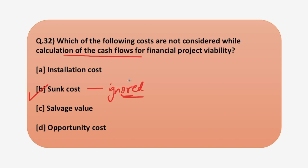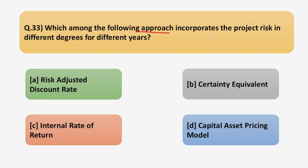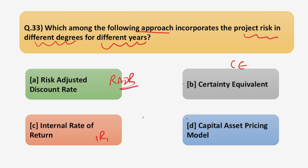The next question asks: which among the following approaches incorporates the project risk in different degrees for different years? Out of the four options — Risk Adjusted Discount Rate (RADR), Certainty Equivalent, Internal Rate of Return (IRR), and Capital Asset Pricing Model (CAPM) — there is one approach which incorporates project risk in different degrees for different years. To answer this, we must know the mechanism of each approach.